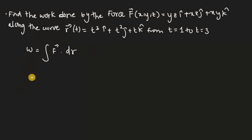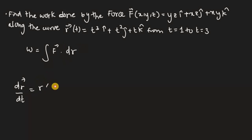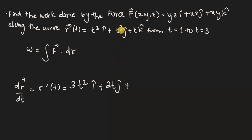So first of all, let's calculate the derivative of the vector function dr. You can write it as dr/dt — the derivative with respect to t — or you can write r prime of t; it's the same thing. So let's do the derivative: bring the 3 down, subtract 1, giving 3t squared i hat; then 2t j hat — bring the 2 down, subtract 1 from the exponent; and the derivative of the k component t is simply 1.